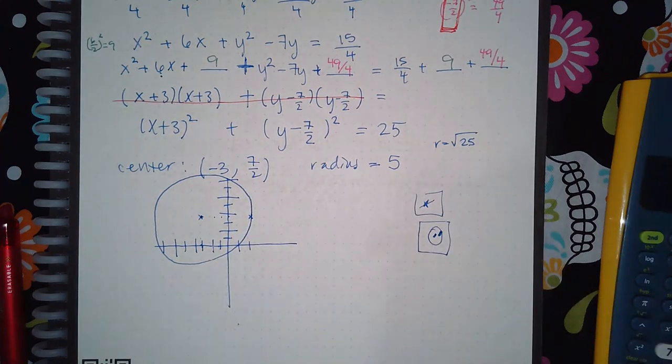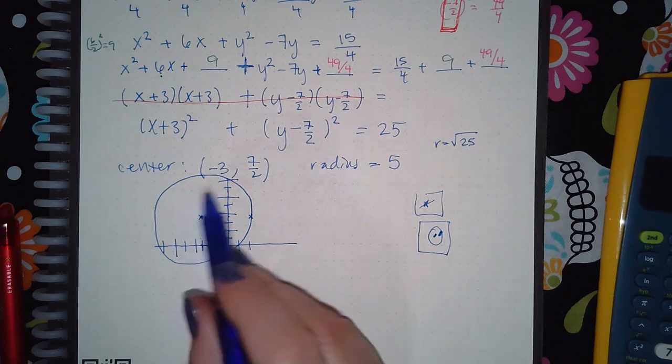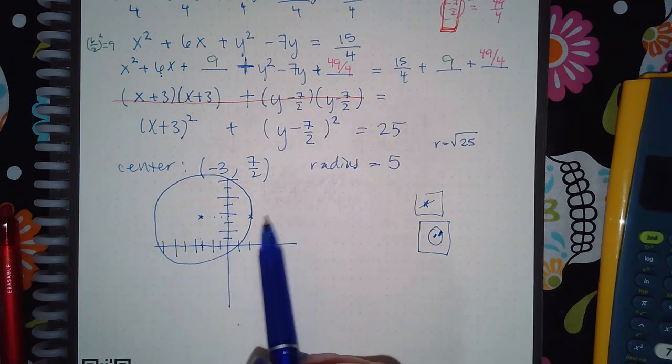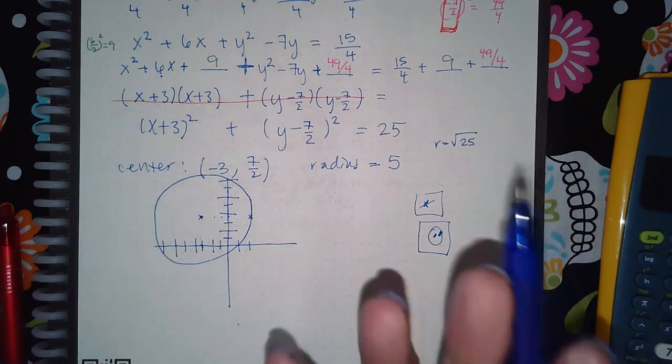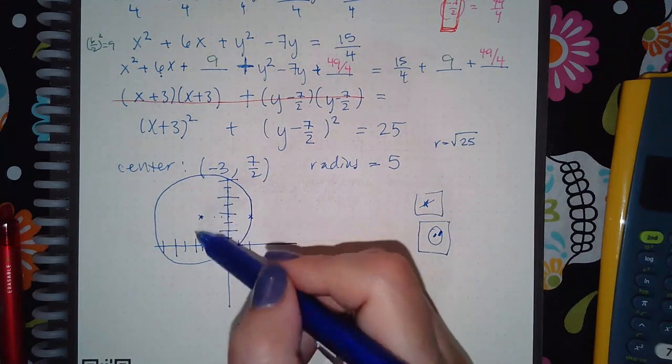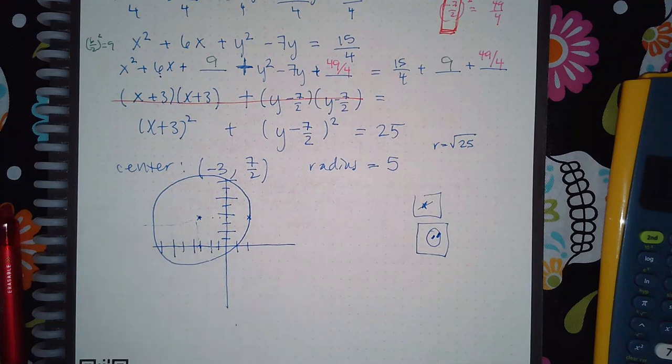So your circle will look like this. You basically just want to make sure: is your center in the correct coordinate, and does it look like it's going five units out in all directions? And as long as it is, then you're good to go—that is correct.